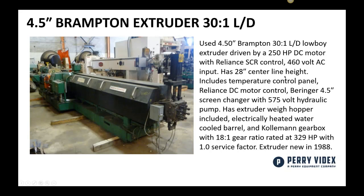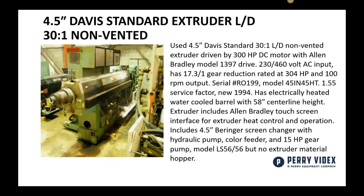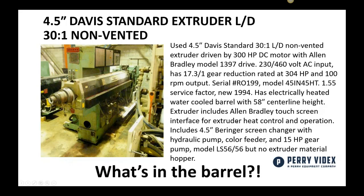Here from the Perividex website we can buy a nice 4.5 inch used Brampton engineering extruder, 31 L over D, gives us the horsepower. We even have a screen changer attached and they give us all the information about the extruder, but what's in the barrel?